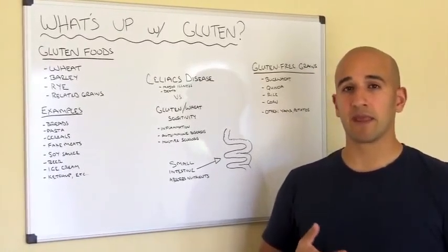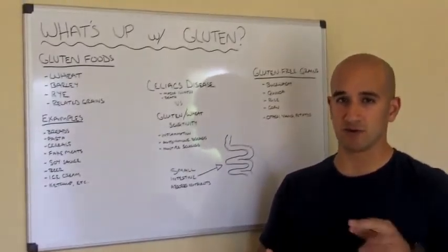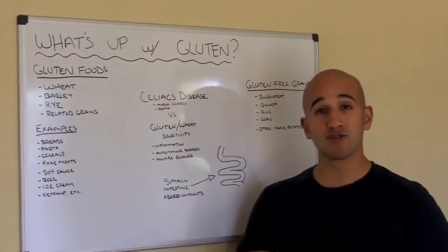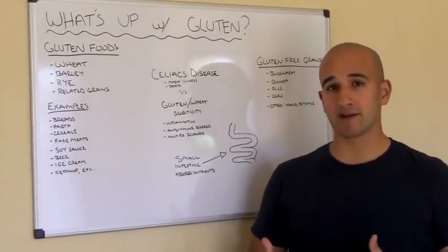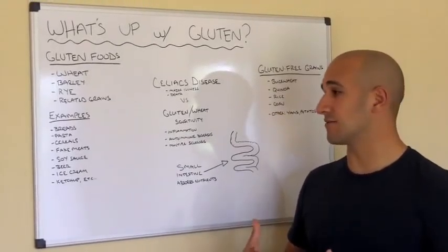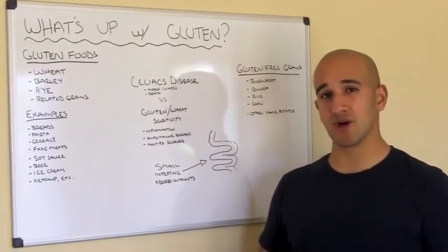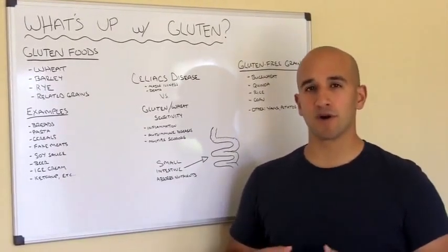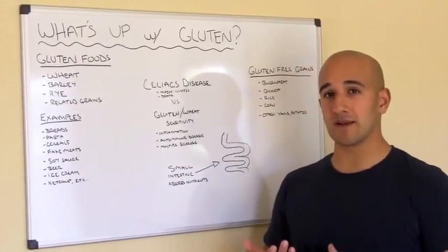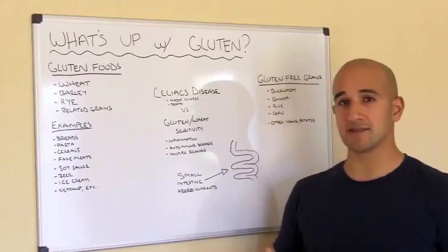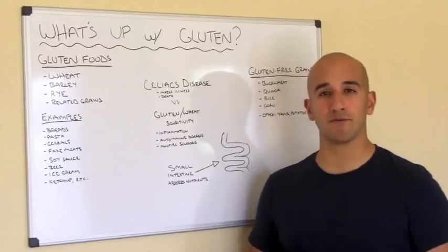You're going to find gluten obviously in breads, pastas, cereals, crackers, also in fake meats like veggie burgers, and most soy products that taste like meats. You're going to find it in soy sauce — at least the ones we get here. There are some soy sauces that don't have gluten, but for the most part you should consider soy sauce a gluten food. Beer, because it's made with wheat, barley and other types of grains. And it's also hidden sometimes in ice cream, ketchup, and a few other foods.